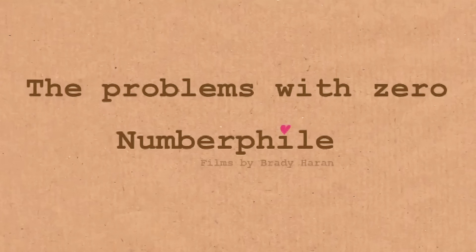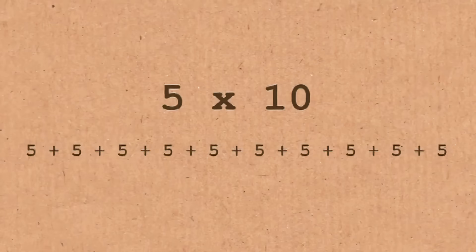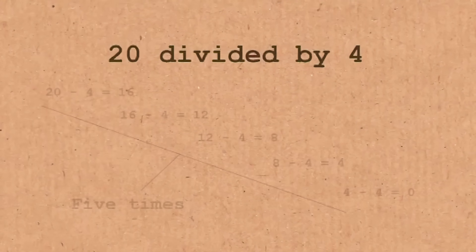This is something we've been asked a lot at Numberphile. You may know that multiplication is just glorified adding, really. If you want to do 5 times 10, you just add on 5 plus 5 plus 5 plus 5, 10 times. Division is just glorified subtraction. So if I want to take a number like 20 and then divide it by 4, I just keep subtracting 4. You take away 4, take away 4, take away 4. You do that 5 times, and that number 5, that's your answer. 20 divided by 4 is equal to 5. So it's just glorified subtraction.